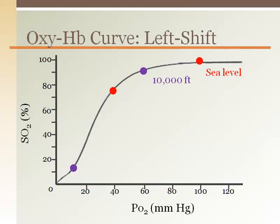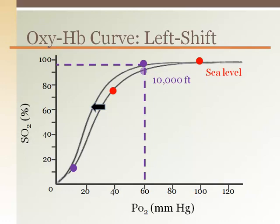Low ambient oxygen levels, such as at altitude, can actually increase the binding ability of hemoglobin so it can extract even more oxygen from the alveolus. This shifts the oxyhemoglobin dissociation curve leftward. At 10,000 feet, an alveolar PO2 of 60 mmHg can still achieve 97% saturation because hemoglobin binds more oxygen than it would at sea level. This allows the blood returning to the lungs to be around 20% saturated, providing a little extra reserve — sort of like having extra gas in the tank.